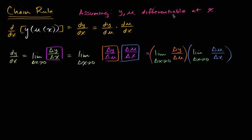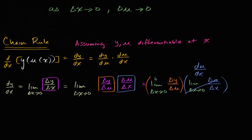And remember, if they're differentiable at x, that means they're continuous at x. But if u is differentiable at x, then this limit exists, and this is u prime of x, or du/dx. So this right over here we can rewrite as du/dx. Now this right over here, just looking at it the way it's written, we can't quite yet call this dy/du, because this is the limit as delta x approaches zero, not the limit as delta u approaches zero.